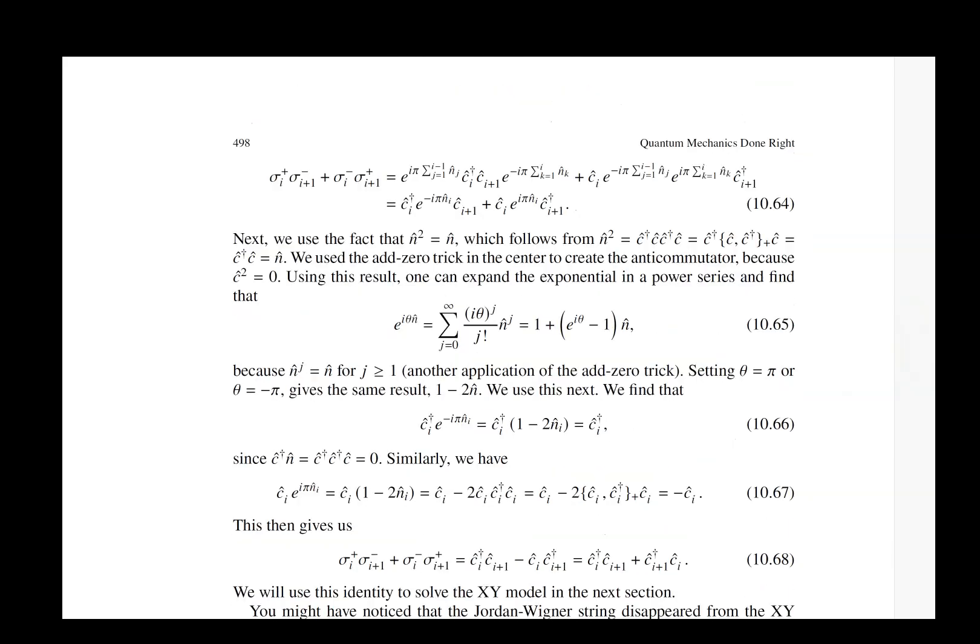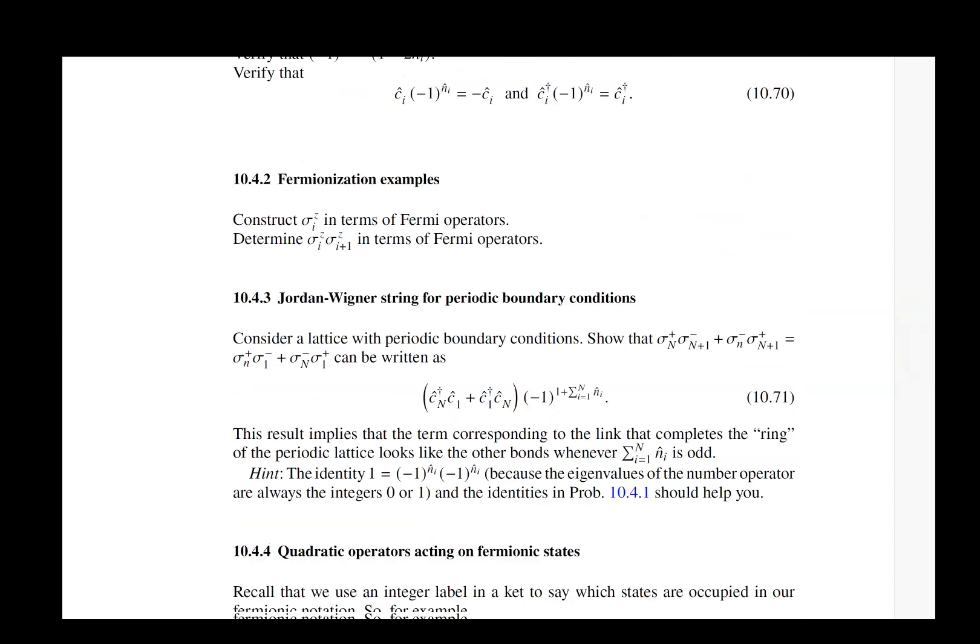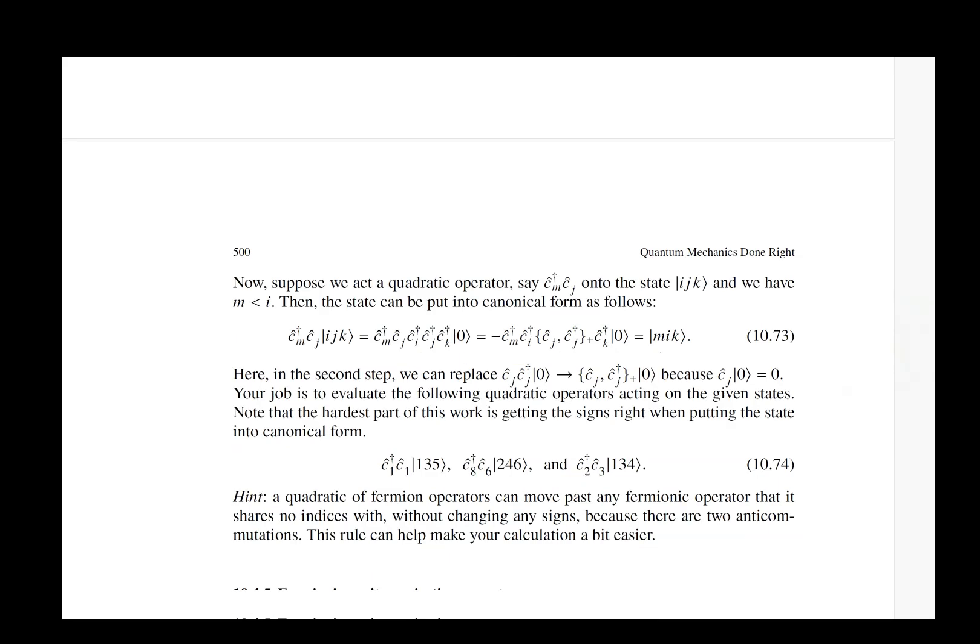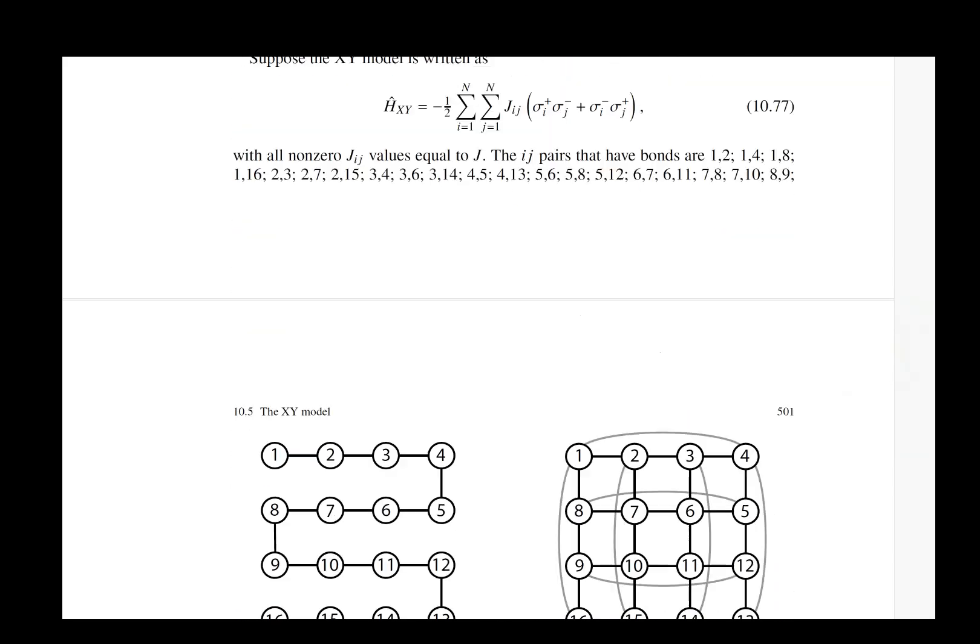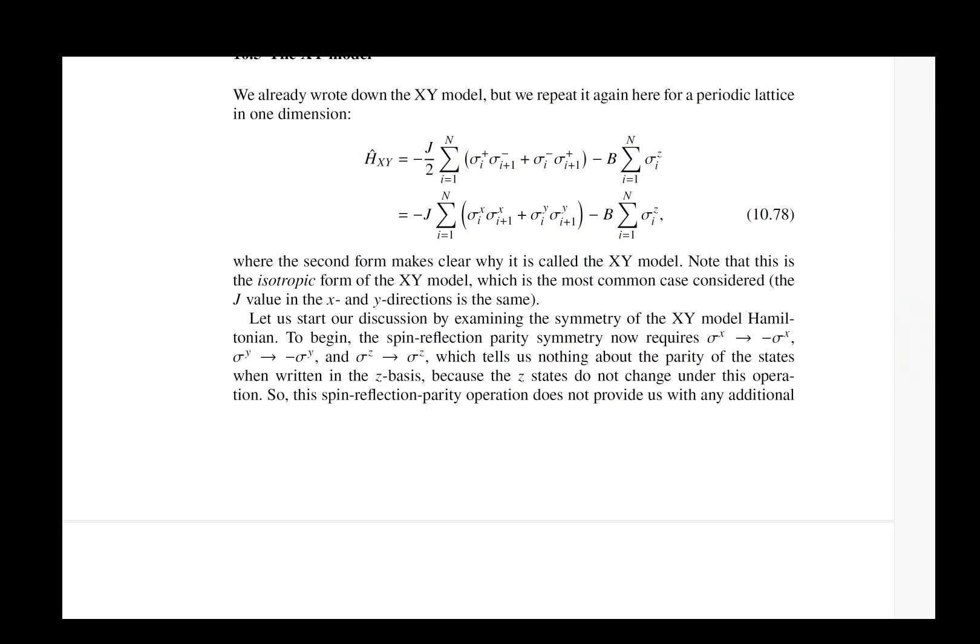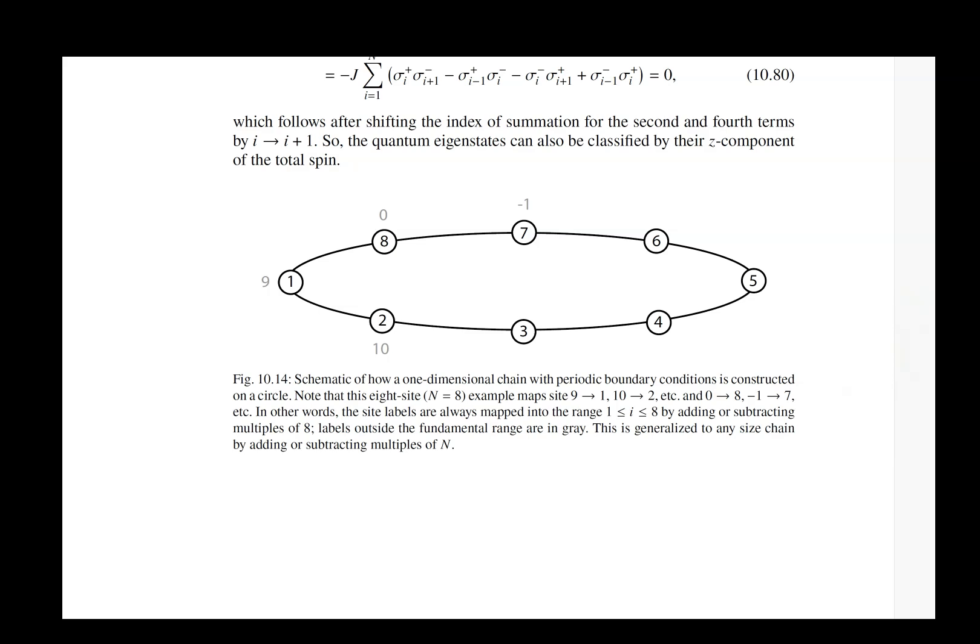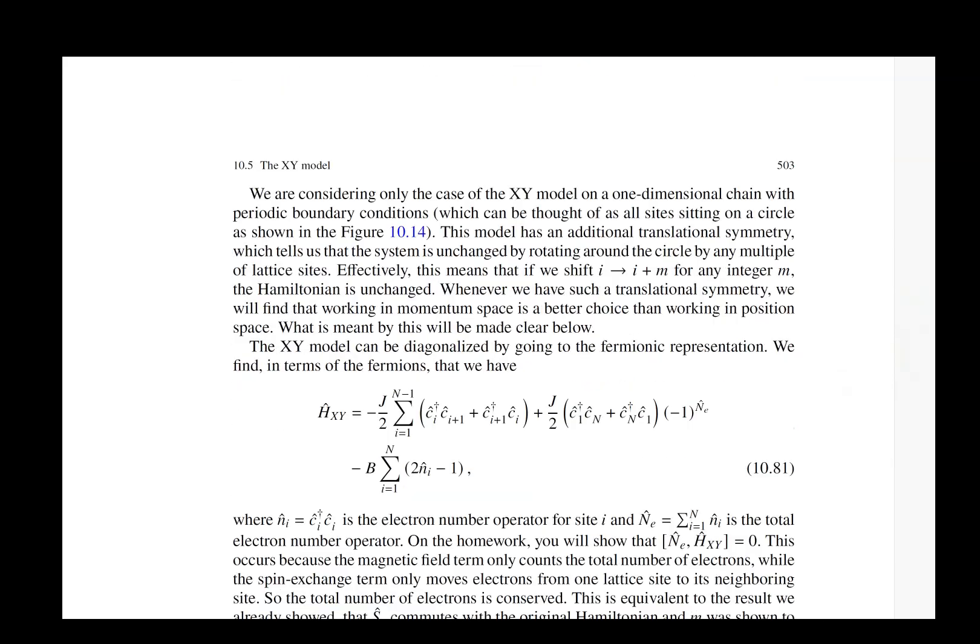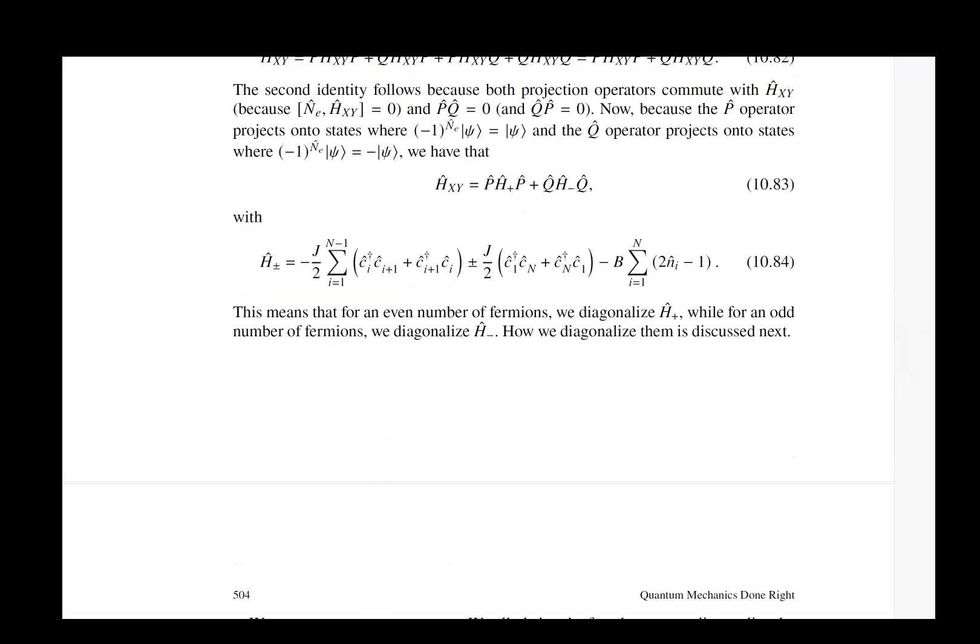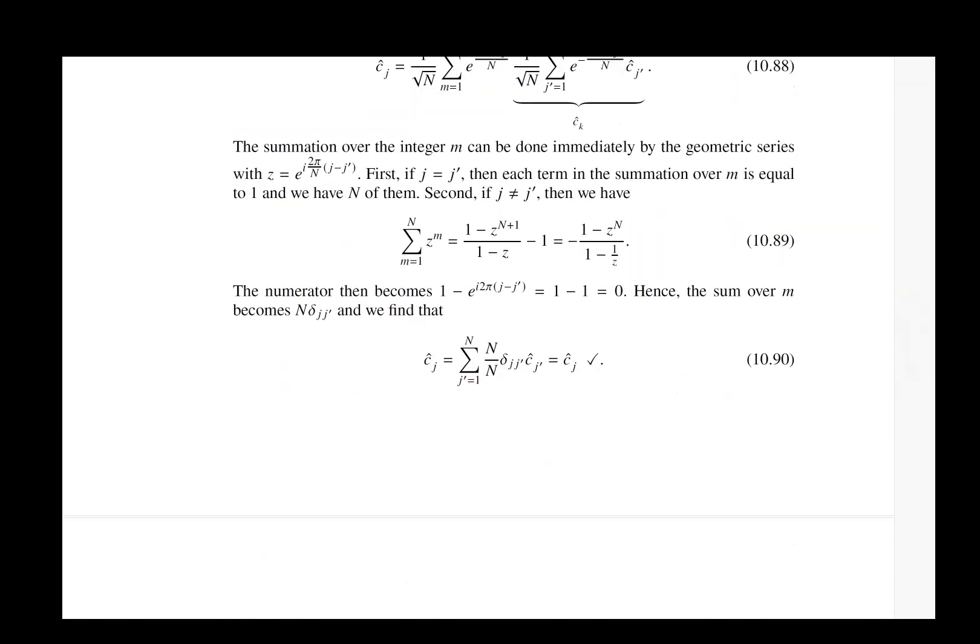We talk a bit about the properties of fermions because this is not something I expect you to know. And then once you've done this Jordan-Wigner transformation, you can then use that fermionization to solve these different models. It turns out the XY model is easier to solve than the Ising model. So we start with the XY model. XY model involves interactions in two spatial dimensions rather than the single dimension that the spins are interacting in for the Ising model.